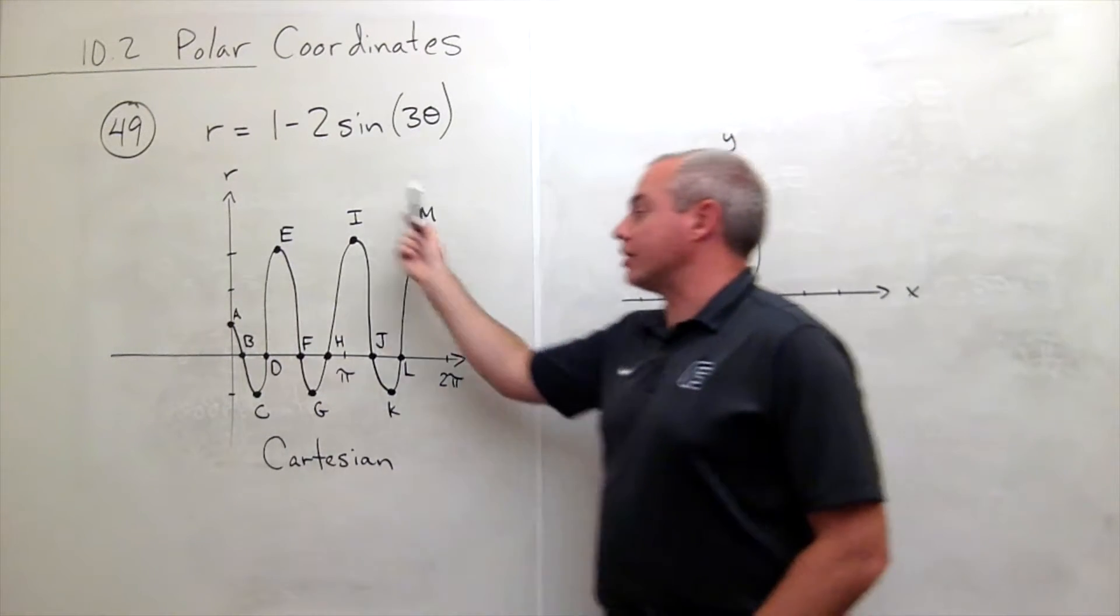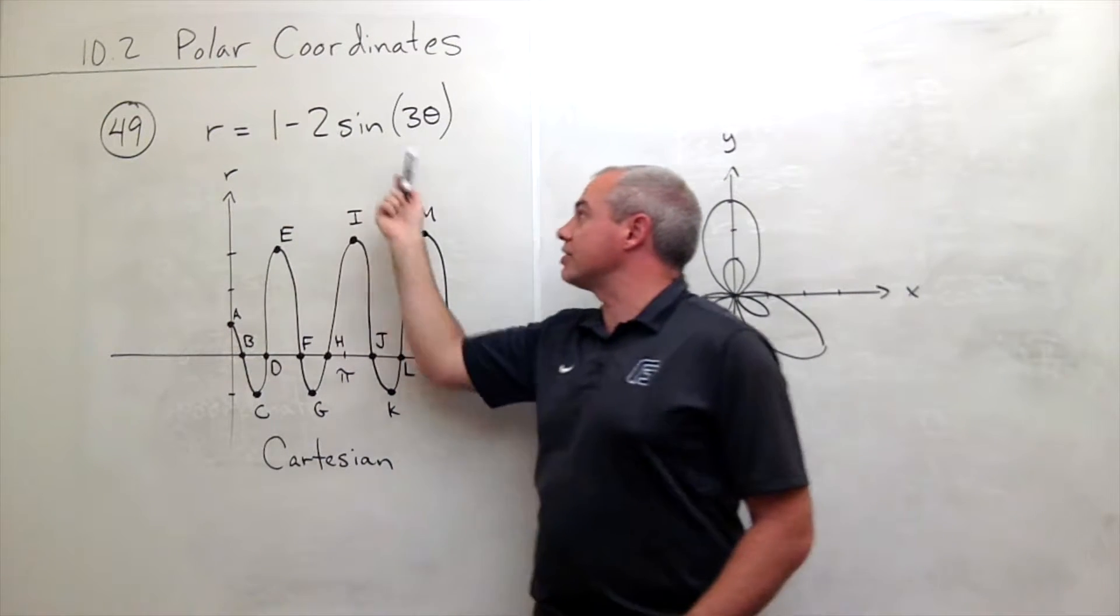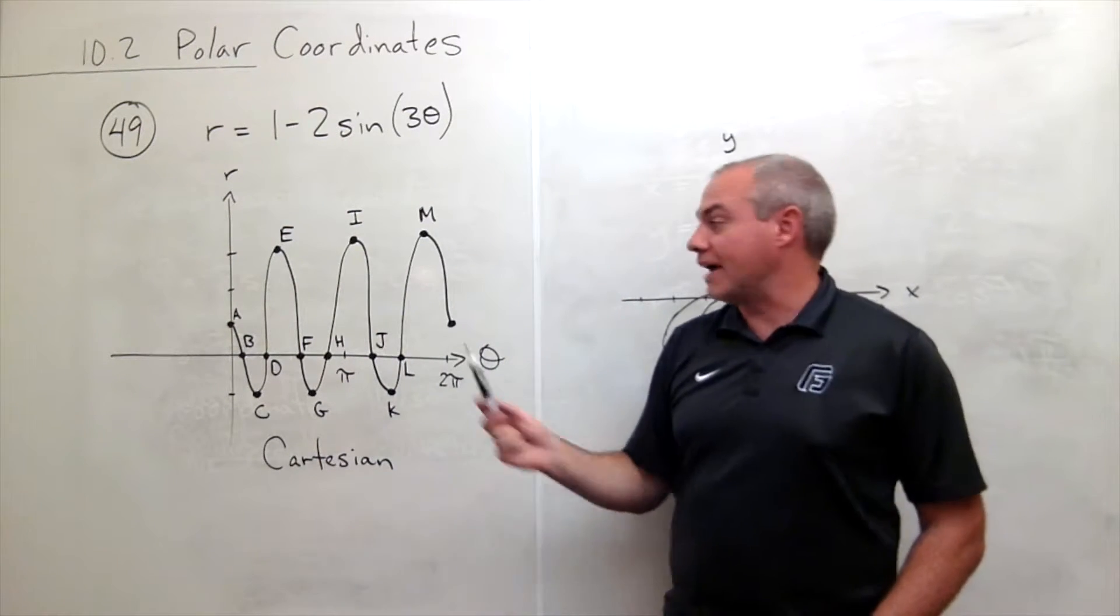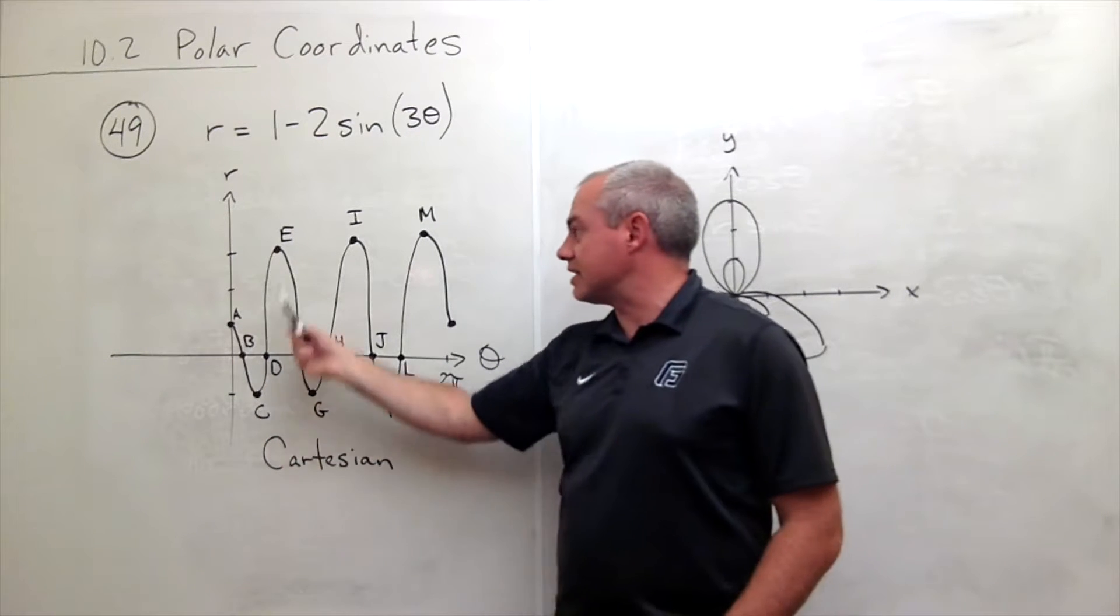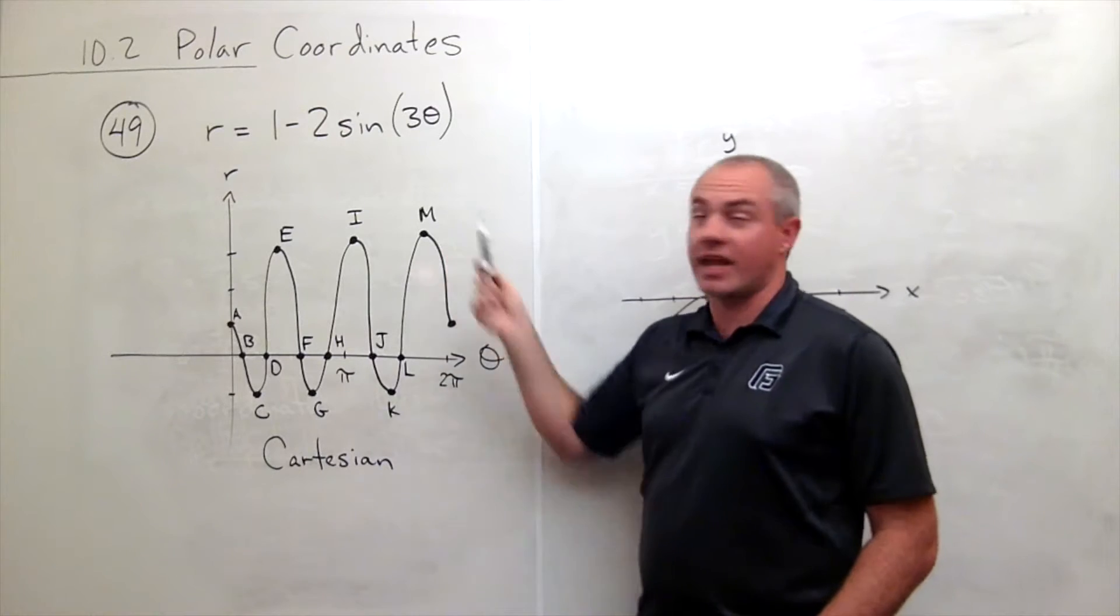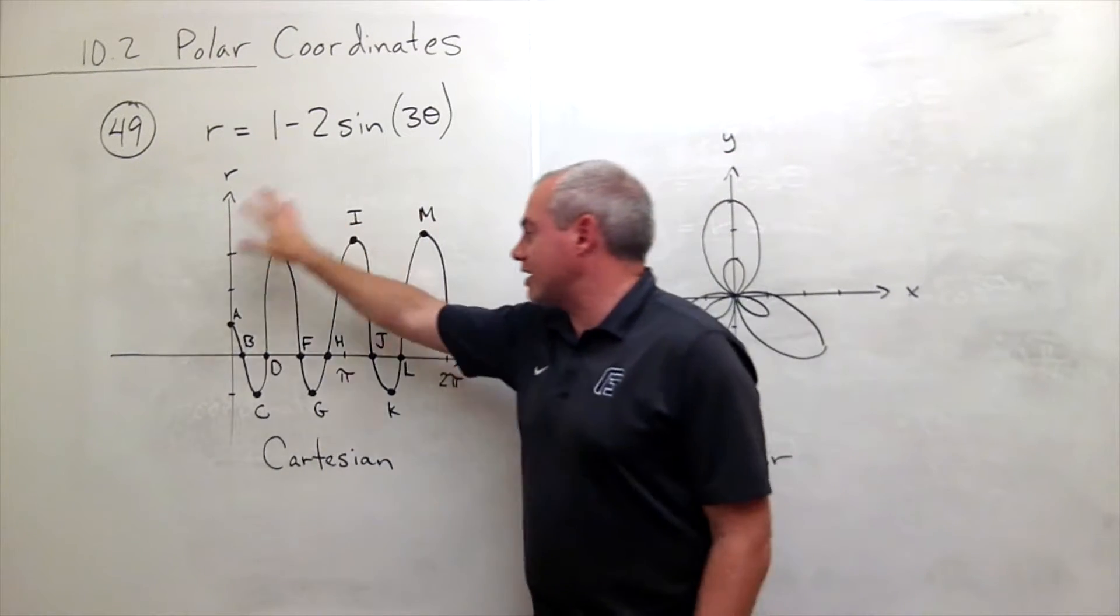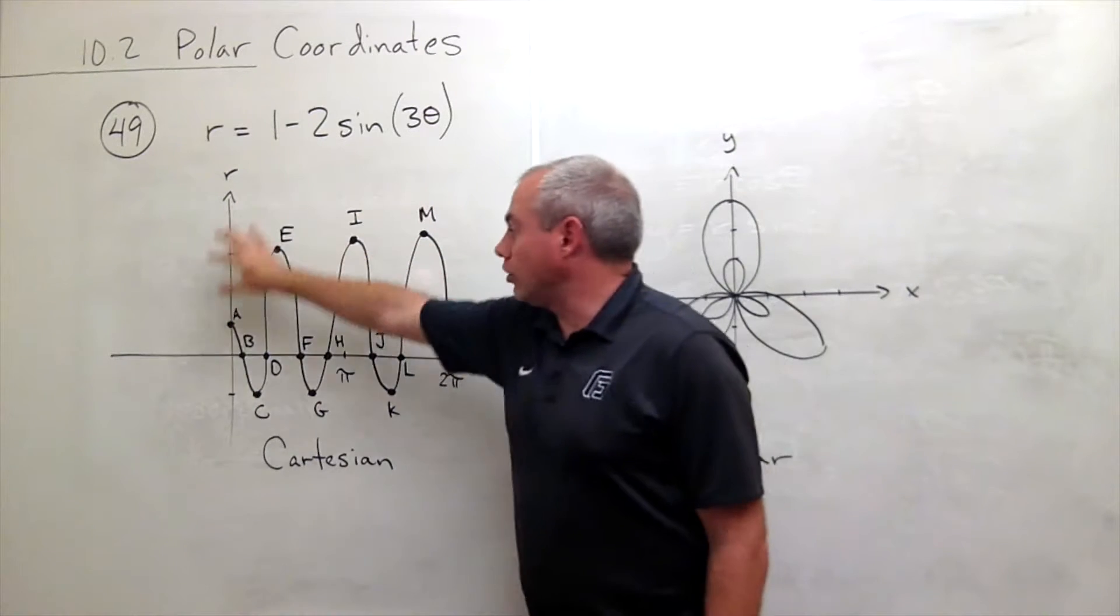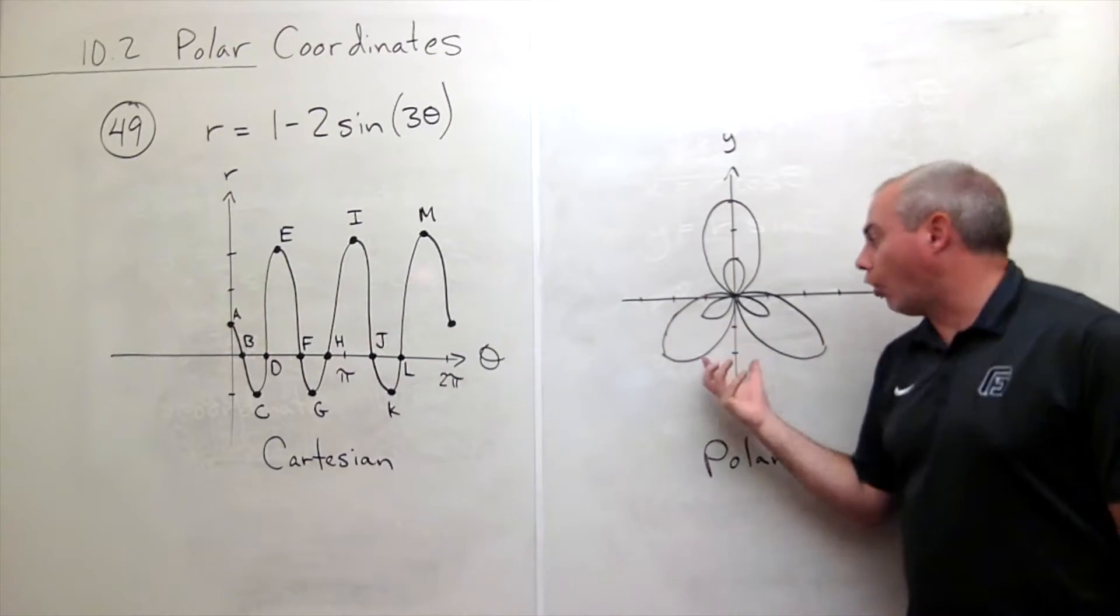Over here on the Cartesian coordinate system for r equals 1 minus 2 sine of 3 theta, I've labeled some things. I've got point A, B, C, D, E, F, all the way through M. And what I'd like to do is say, here are some polar coordinates that lie on this polar curve.